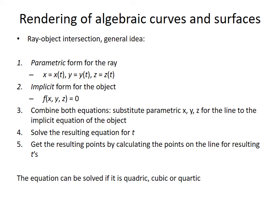Then, we need to substitute parametric x, y, z for the line to the implicit equation of the object. Fourth and fifth steps are: solve the resulting equation for t and get the resulting points by calculating the points on the line for resulting t's.